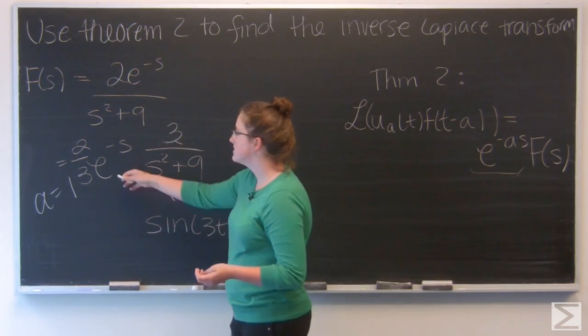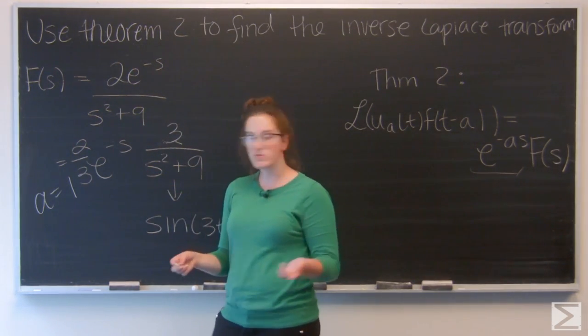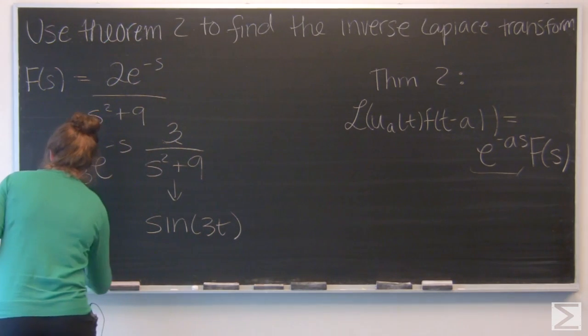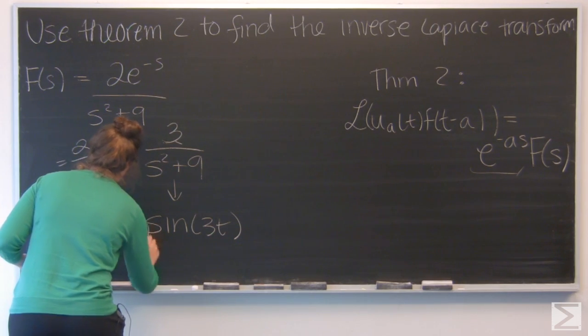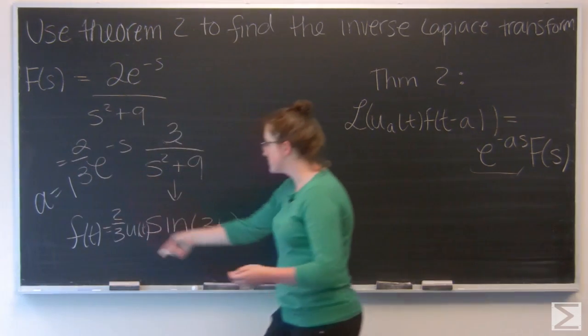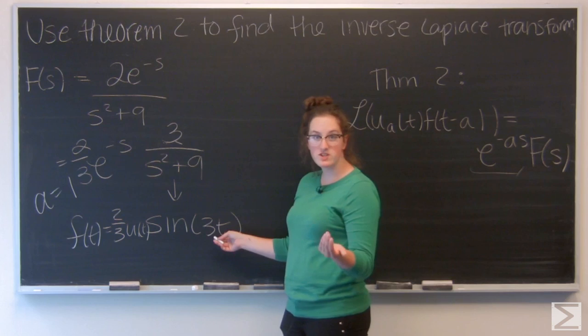But I need to take into account this exponential, so I'm going to multiply by u sub 1 of t. And carry that 2 thirds down, and then I just need to swap this t for a t minus 1.